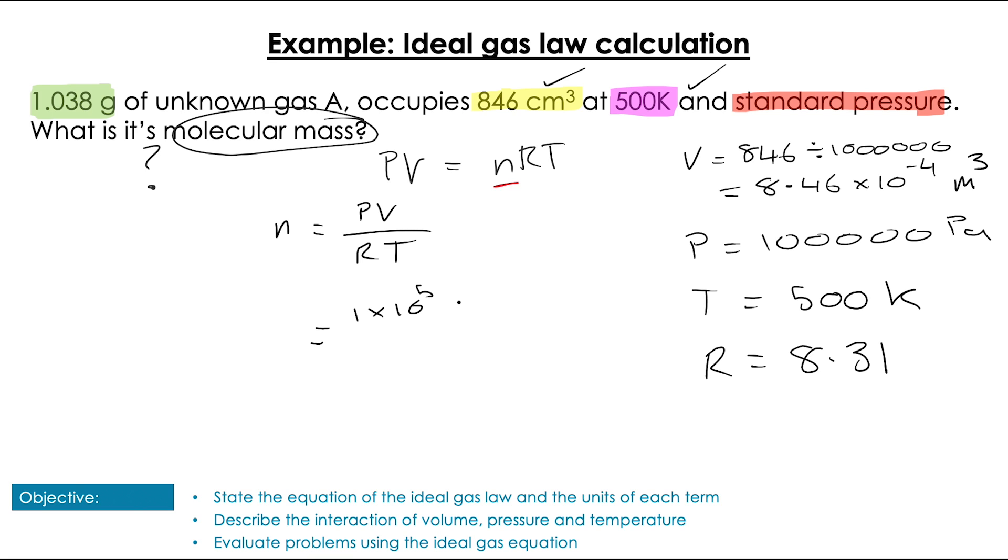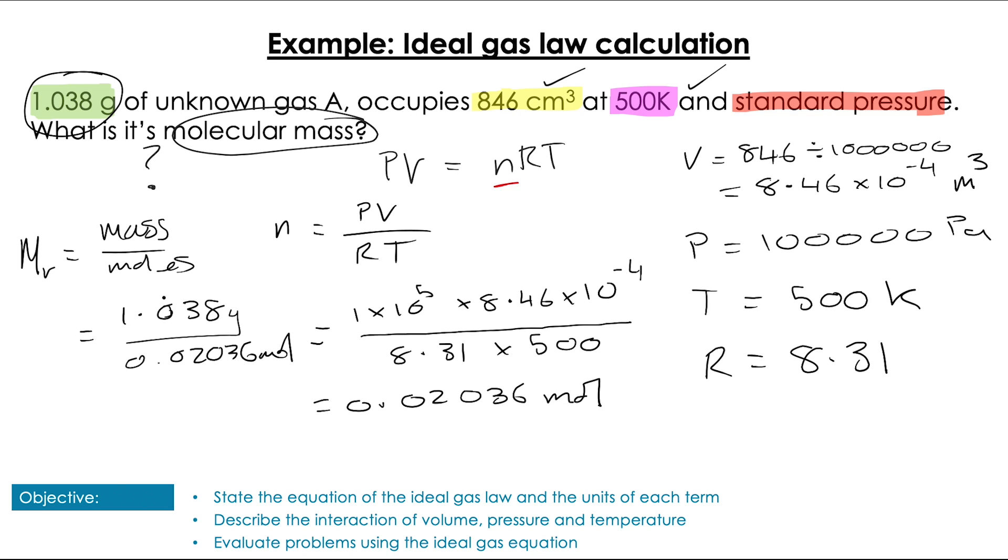So write our equation out to find N and then plug in the values that we've converted to our correct standard SI units into that equation. So we get 100,000 multiplied by 8.46 times 10 to the minus 4 divided by 8.31 times 500. That's going to give me my number of moles as 0.02036 moles and from earlier in the unit, we know that molecular mass is going to be mass over moles. So we get 1.038 grams divided by 0.02036, which gives us a molecular mass of 51 grams per mole. Awesome.